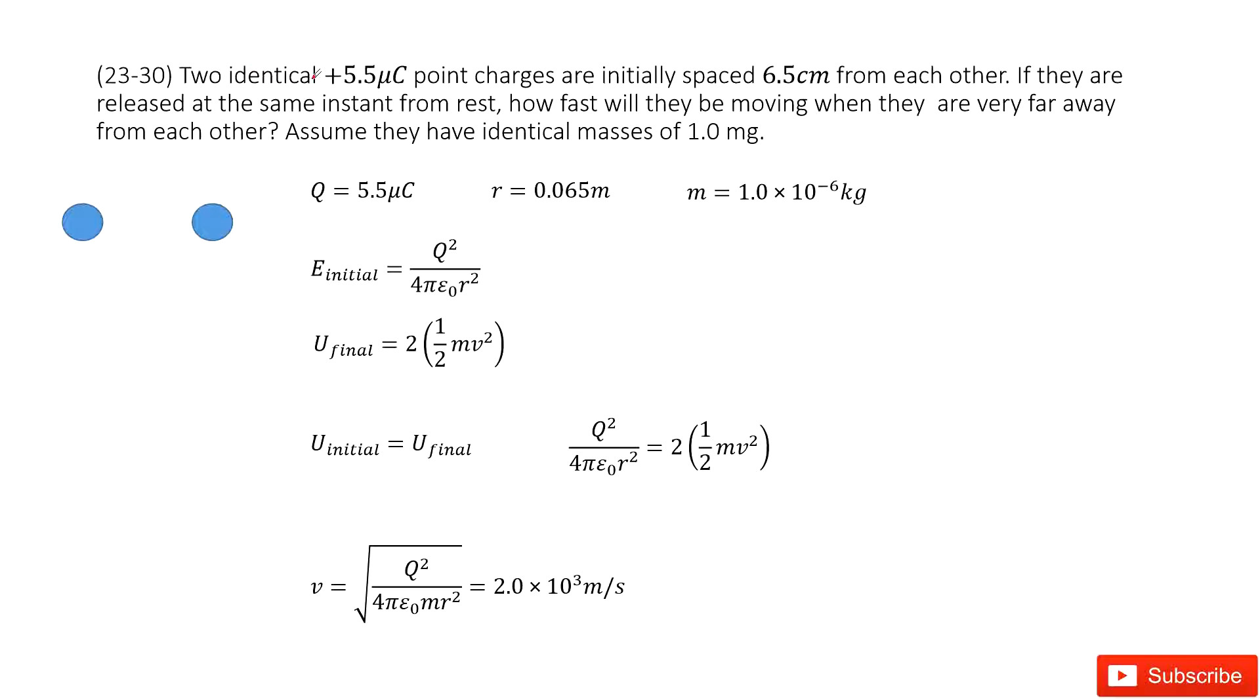We can see we have two identical point charges. The charge is Q. The distance between them, R, is given. The mass of these two point charges is given.